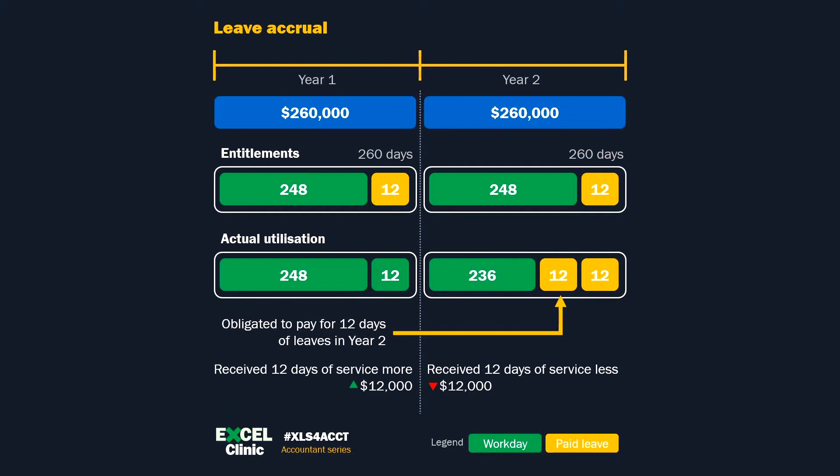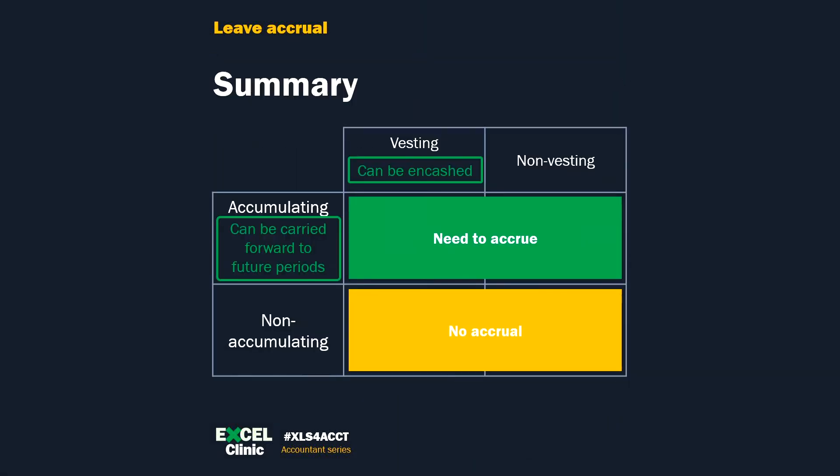This is an explanation that helped me understand, however it is not the most accurate interpretation of the standard. In sum, as long as the leaves are accumulating — meaning they can be carried forward to the next financial period — they need to be accrued. This is regardless of whether they are vesting.